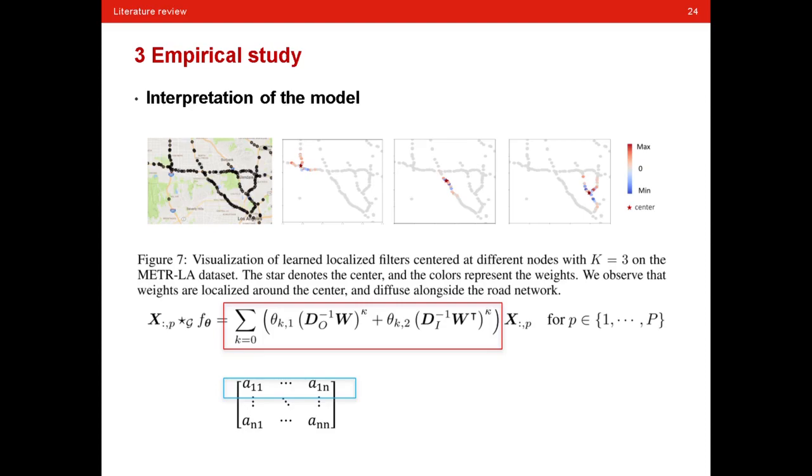Then we come to another interesting part of this empirical study. That's the interpretation of the model. Since deep learning is most likely to be regarded as a black box, the interpretability of the deep learning is very critical for domain application. Here, the paper visualizes the weights after training the parameters. And then we can see that the weights are localized around the center and diffuse alongside the network. You can see each picture. And this is the target segment to predict traffic flow. And its prediction has very close relationship with its upstream and downstream, its surrounding segments. Thus, it can be explained that the prediction of a target road segment has a close relationship with its surrounding segments. That's the interpretation of the model, and I think this is valuable.